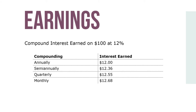We can see that the annual percentage yield is the same as the nominal rate when interest is compounded annually. However, it jumps to 12.36% when the compounding is changed to semi-annually, and 12.68% when compounded monthly.